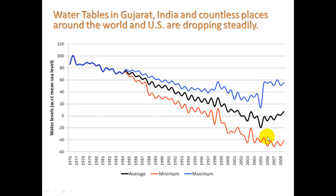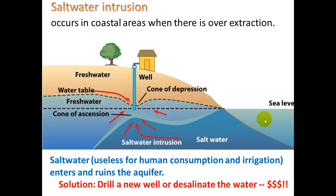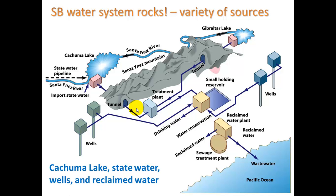The data shows areas where groundwater has reached a minimum, areas where it's at a maximum, and the average of the two — measured at several locations. Clearly, it is dropping. When it drops, we can face saltwater intrusion — for coastal areas where the water table drops below sea level, seawater comes into the aquifer and you end up pumping seawater. Seawater is useless for drinking or irrigation, and the only solutions are drilling a new well or desalinating the water, both of which are very expensive.